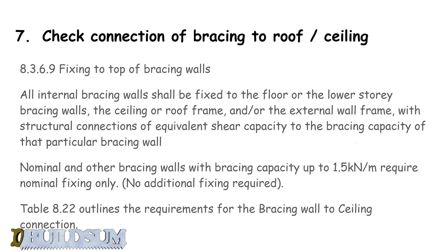The timber framing code paragraph 8.3.6.9 covers fixing to the top of bracing walls. It states that all internal bracing walls shall be fixed to the floor or the lower storey bracing walls, the ceiling or the roof frame, and/or the external wall frame, with structural connections of equivalent shear capacity to the bracing capacity of that particular wall.